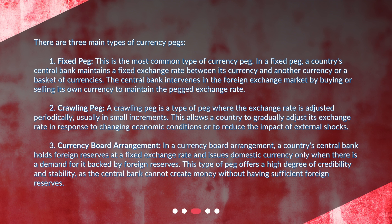Third, the currency board arrangement. In a currency board arrangement, a country's central bank holds foreign reserves at a fixed exchange rate and issues domestic currency only when there is a demand for it backed by foreign reserves. This type of peg offers a high degree of credibility and stability, as the central bank cannot create money without having sufficient foreign reserves.